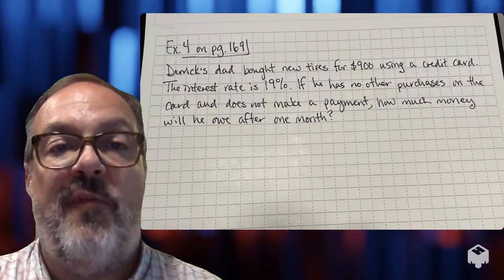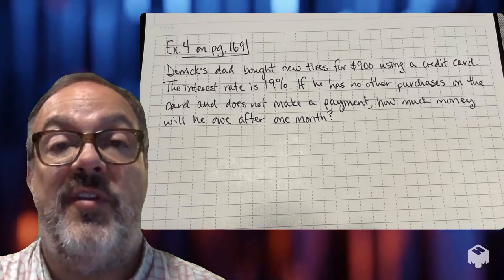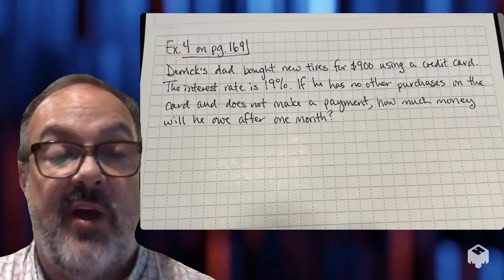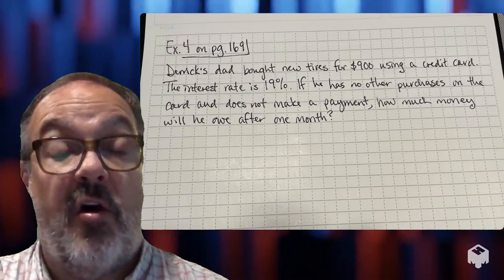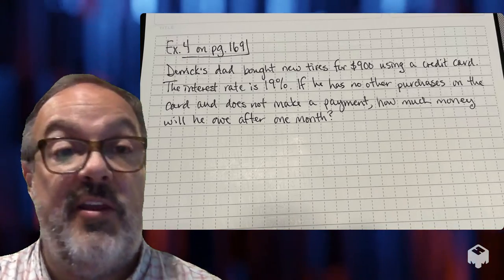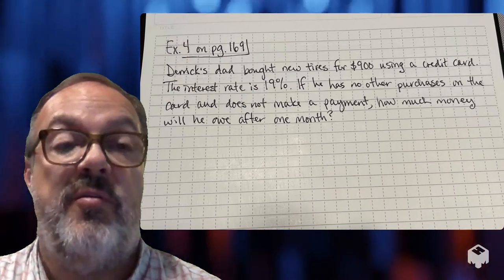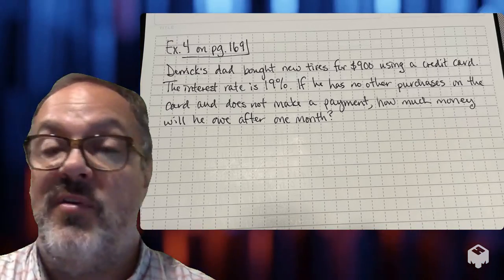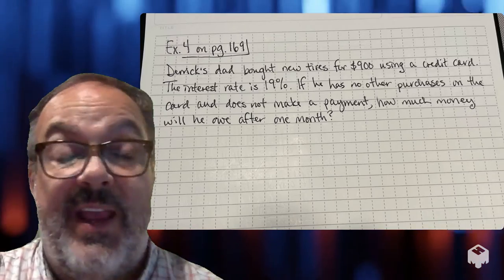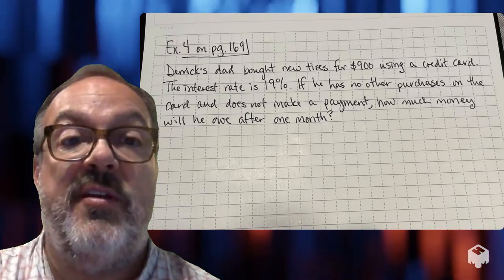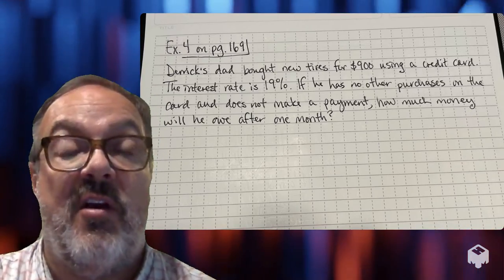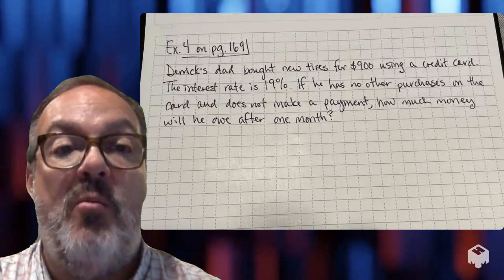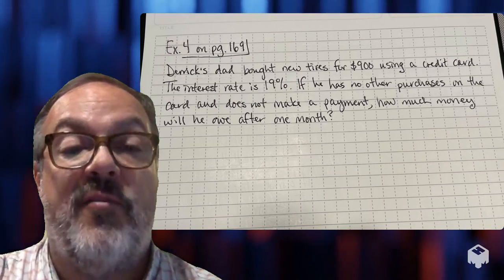In example four, we have a problem that involves the use of a credit card. Derek's dad bought some new tires for his car and it cost $900. He used his credit card to purchase those tires. The interest rate on the credit card is 19%. Let's assume he has not made any other purchases on the card and has not made a payment. We want to find out how much he will owe after one month.